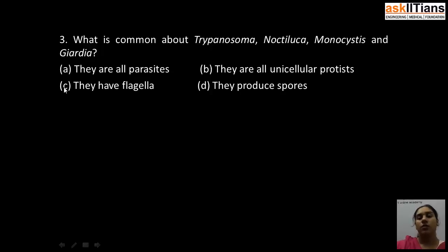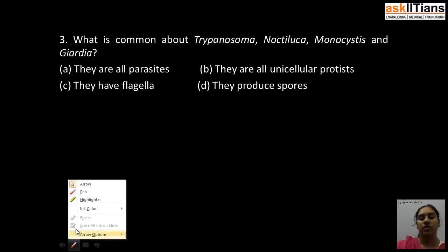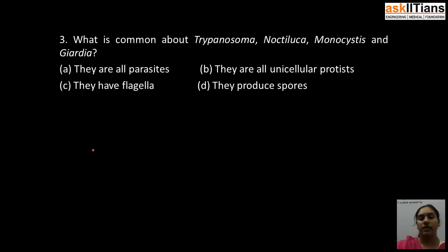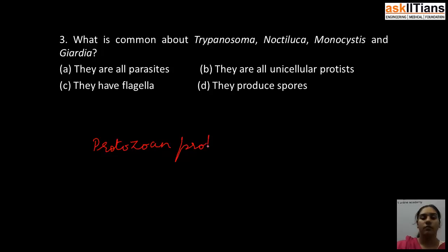The next question is: what is common about Trypanosoma, Noctiluca, Monocystis, and Giardia? A) They are all parasites, B) They are all unicellular protists, C) They have flagella, D) They produce spores. The correct answer is B: they are all unicellular protists. Trypanosoma, Noctiluca, Monocystis, and Giardia are examples of protozoan protists.